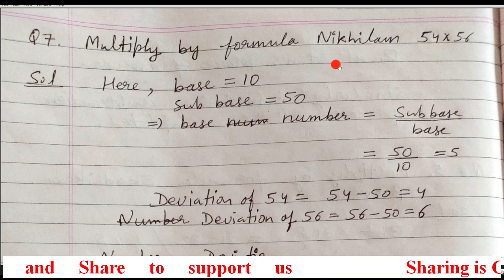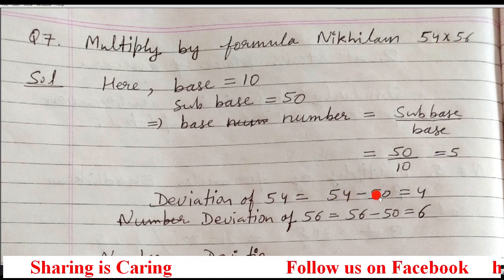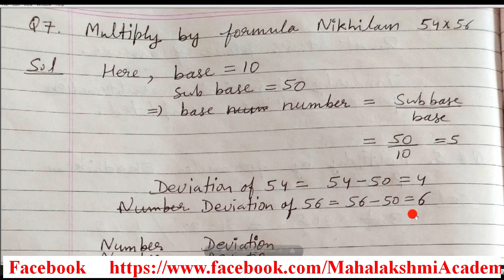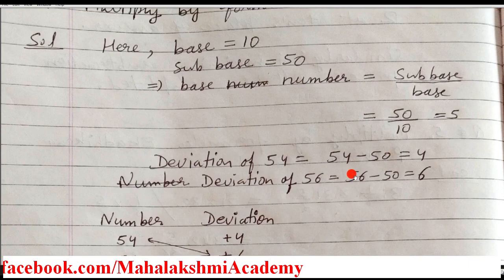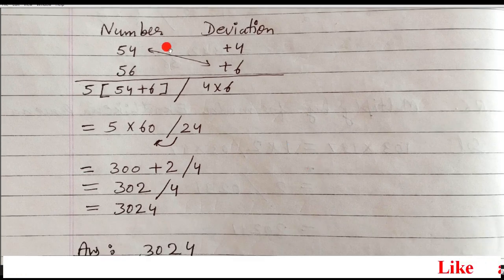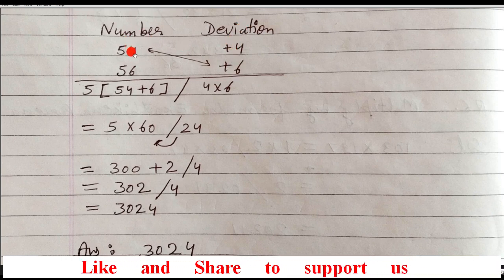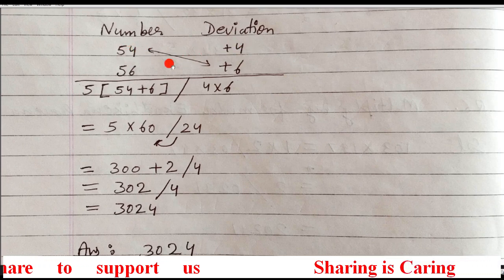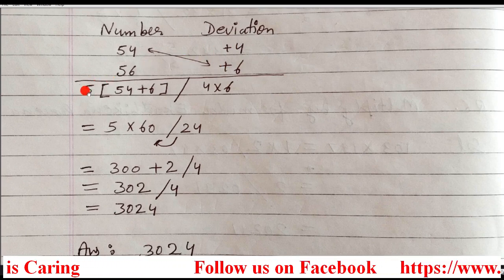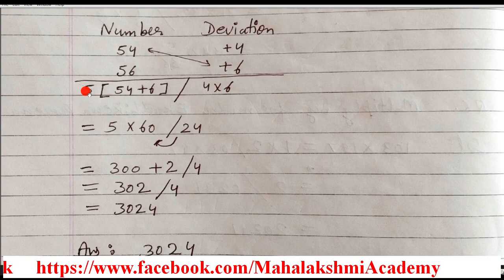We have to find the deviation of both numbers. Deviation formula is: number minus subbase. So deviation of 54 is 54 minus 50, which is 4. And deviation of 56 is 56 minus 50, which is 6. Now we start the Nikhilam multiplication. Write in two columns — the number and the deviation. So write 54 and 56, with deviations 4 and 6 respectively.